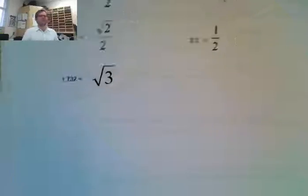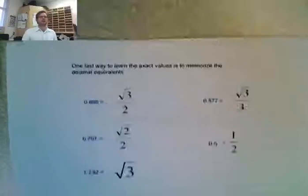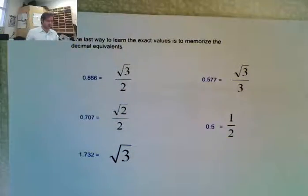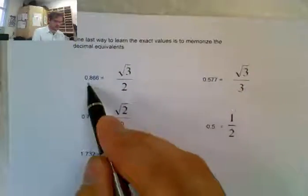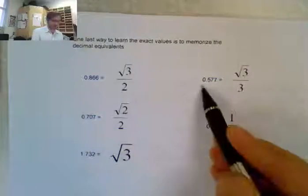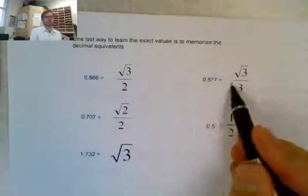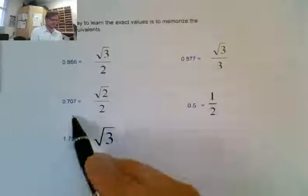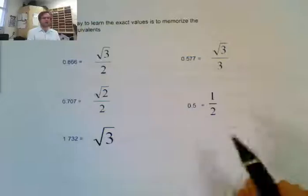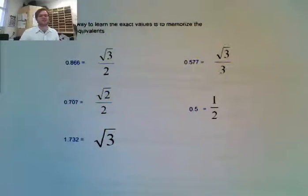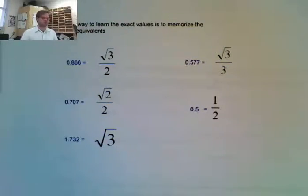The last method is to just memorize these decimal-to-fraction equivalents. This is always equivalent to that, this is always equivalent to that — and so on. So that's the third method: just memorize.